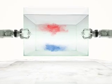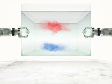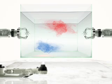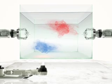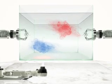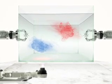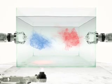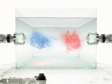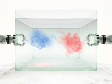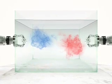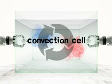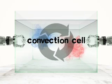Let's watch what happens as the blue water now becomes heated — it begins to rise. The blue water will get warm and less dense and begin its journey up in the tank. This entire process is called a convection cell.